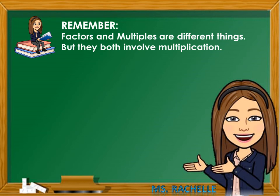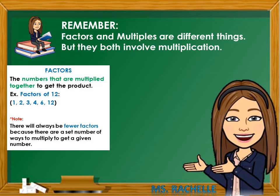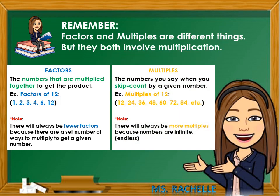Remember, factors and multiples are different things, but they both involve multiplication. Factors are the numbers that are multiplied together to get the product. Example: factors of 12 are 1, 2, 3, 4, 6, and 12. Note, there will always be fewer factors because there are a set number of ways to multiply to get a given number. While multiples are the numbers you say when you skip count by a given number. Example: multiples of 12 are 12, 24, 36, 48, 60, 72, 84, etc. Note, there will always be more multiples because numbers are infinite, meaning endless.